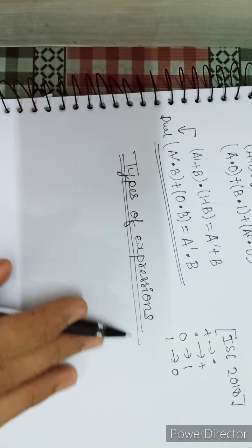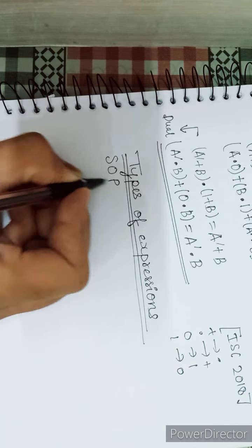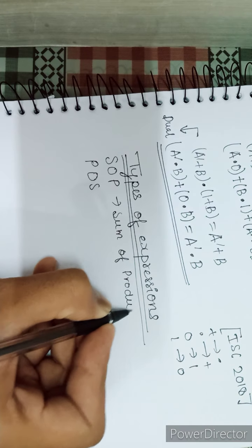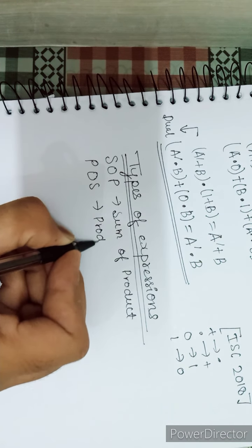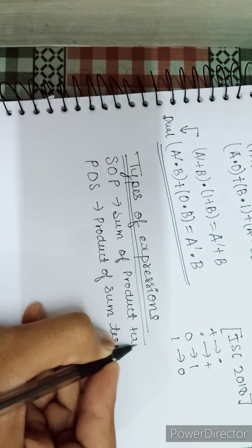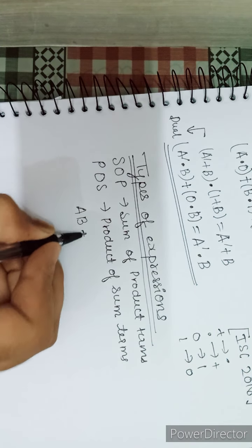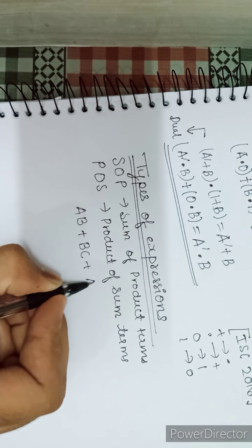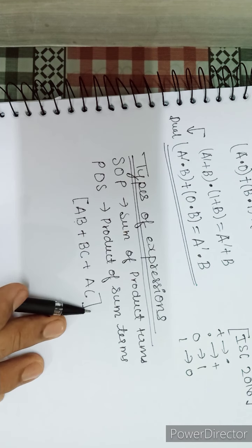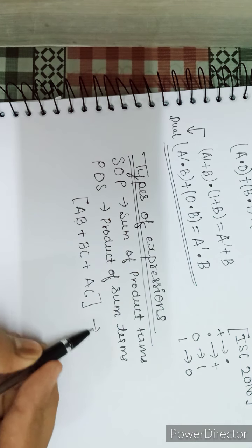The next topic is types of expressions. Generally there are two types of expressions: SOP and POS. SOP is Sum of Product terms and POS is Product of Sum terms. For example, AB plus BC plus AC — when we multiply then add, this is Sum of Product terms, so this is SOP.